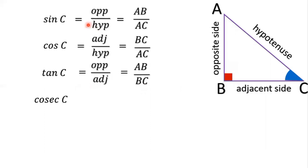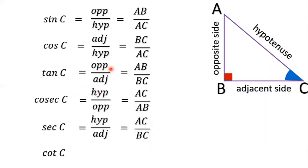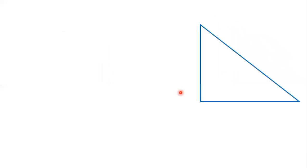Cosec C is the reciprocal of sin C, that is hypotenuse by opposite, equal to AC by AB. Sec C is the reciprocal of cos C, that is hypotenuse by adjacent, equal to AC by BC. Cot C is the reciprocal of tan C, that is adjacent by opposite, equal to BC by AB. Remember: the first three trigonometric ratios are sin C, cos C, and tan C, and the remaining three — cosec C, sec C, and cot C — are their reciprocals respectively.